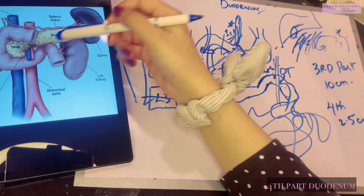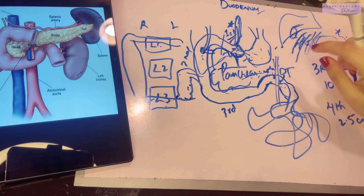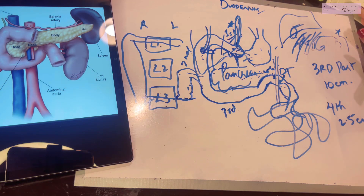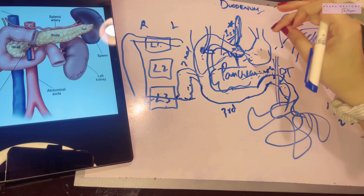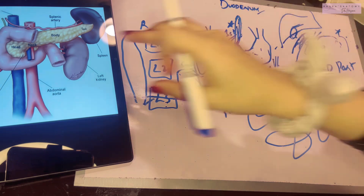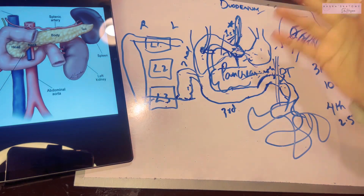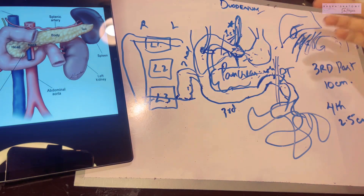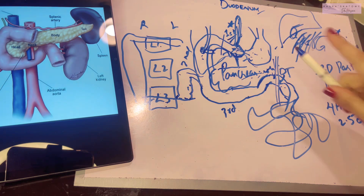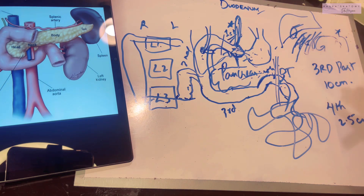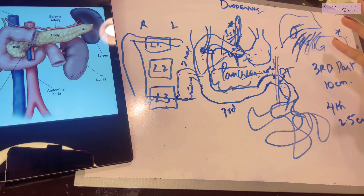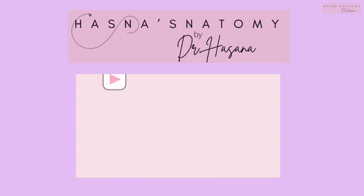These were the important relations of the duodenum — very important details that you can only truly understand by visualizing the structures, because anatomy is mostly the game of visualization. Join me in the next video where I'll talk about the suspensory ligament of Treitz along with the neurovascular supply of the duodenum. Thank you so much for watching.